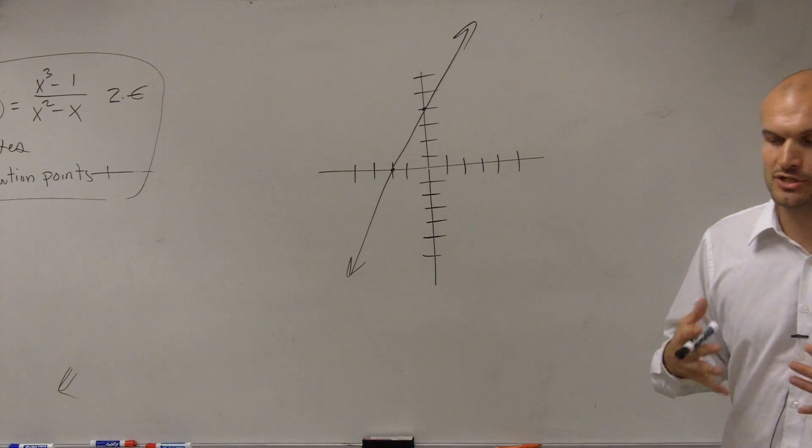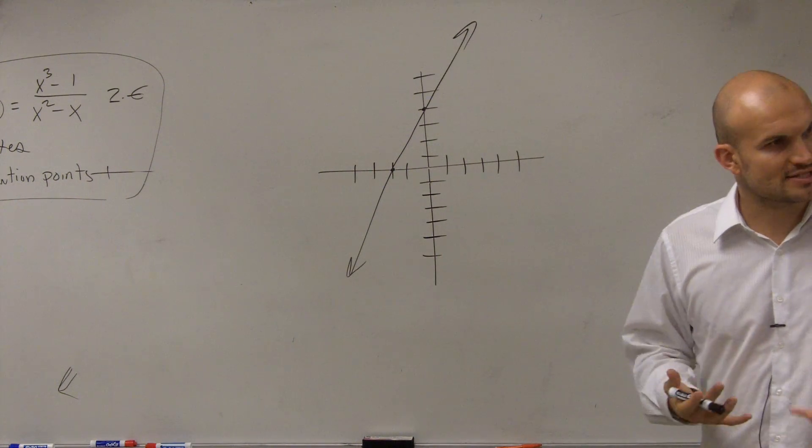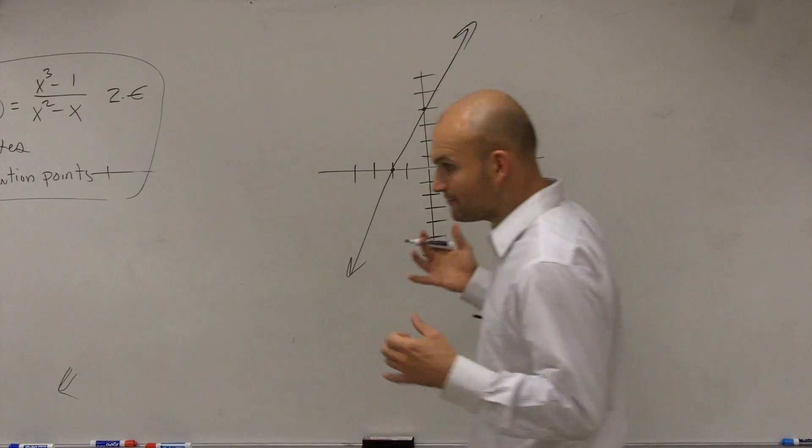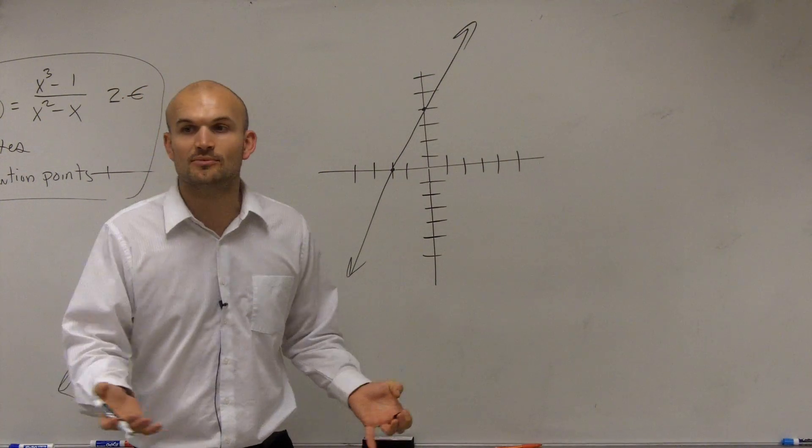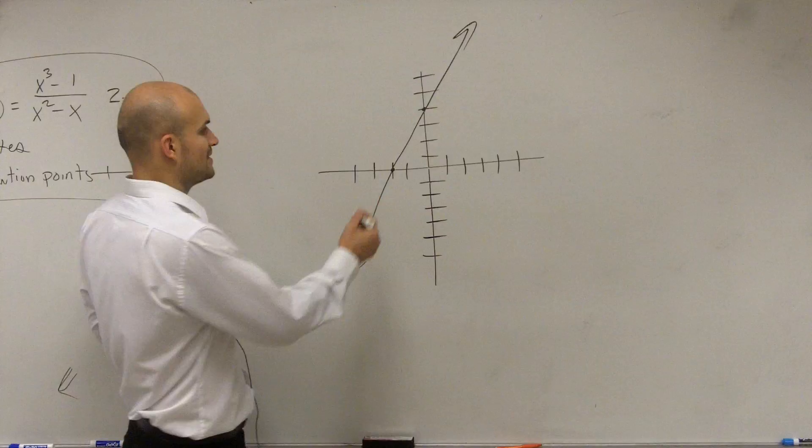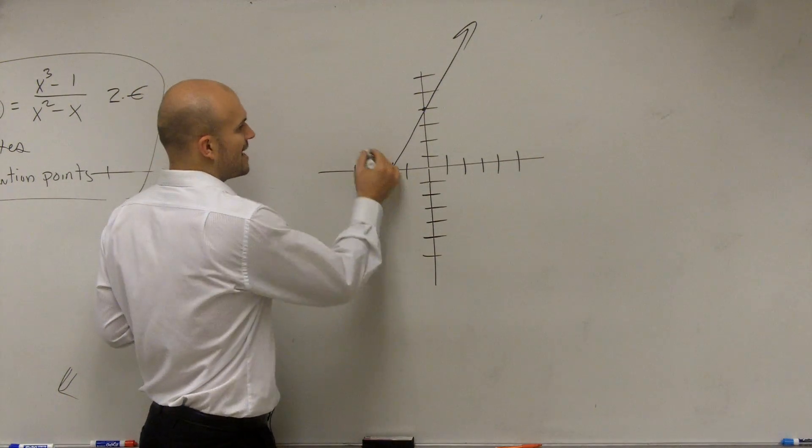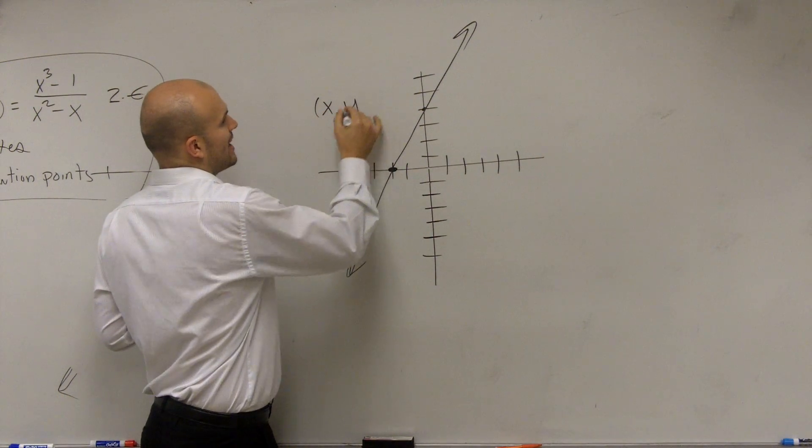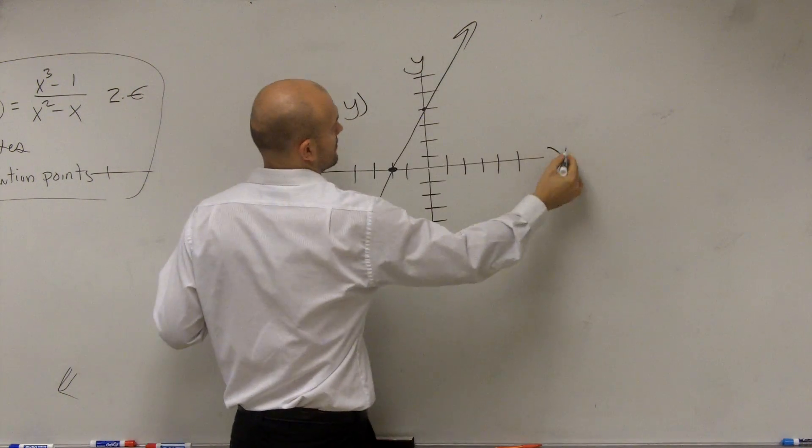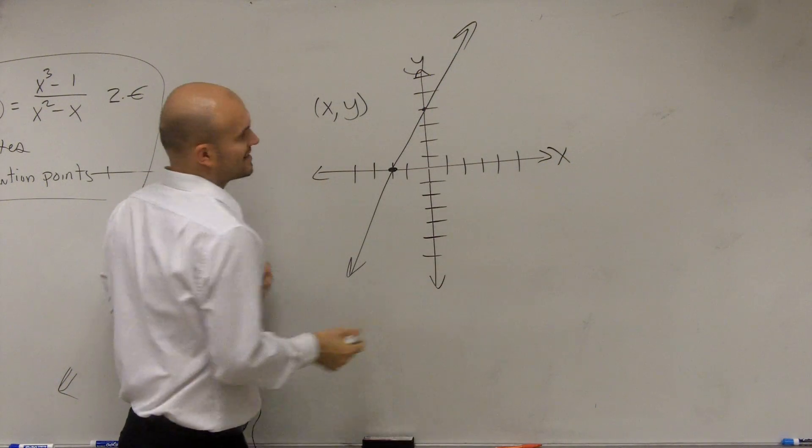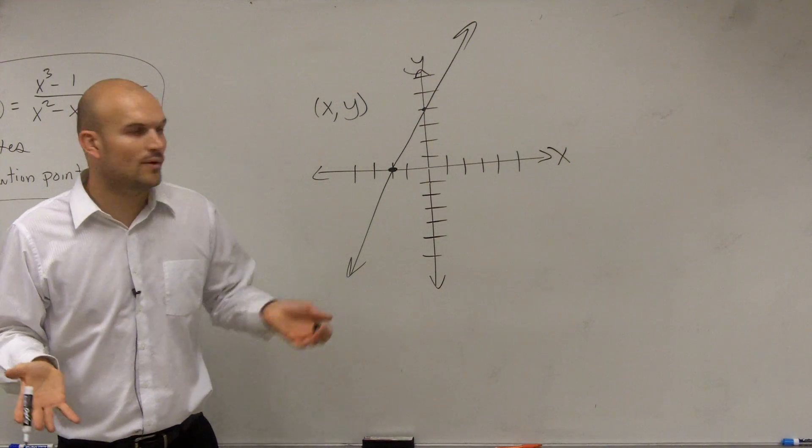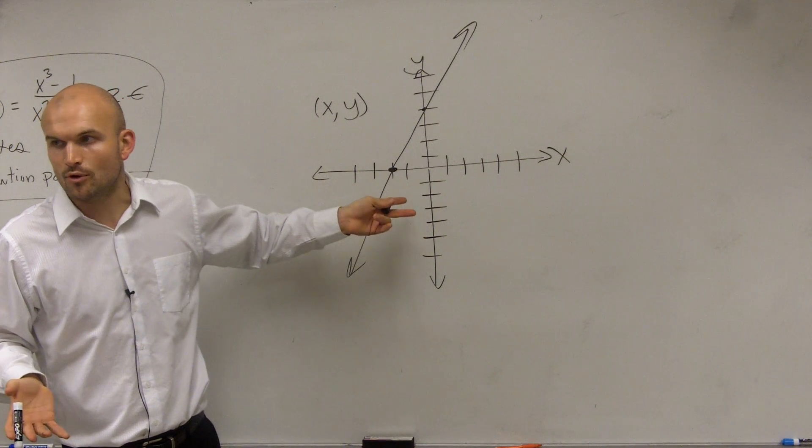Now when given a graph, the easiest way to determine that change is what we call a slope triangle. What I do is first highlight two points that I can compare the x and y values, because every point on a graph has an x and a y coordinate. When you're plotting points, every one of these points has an x and y coordinate.